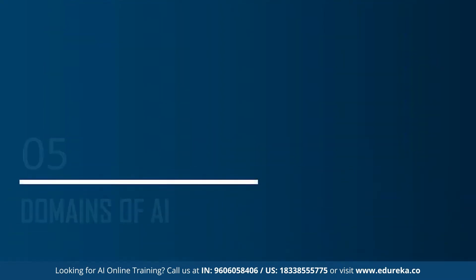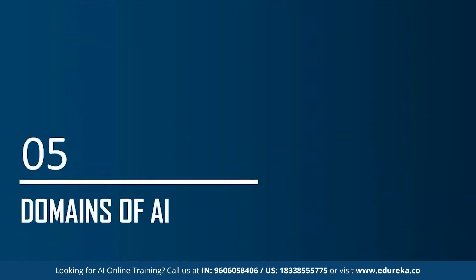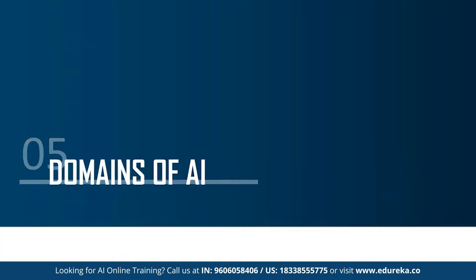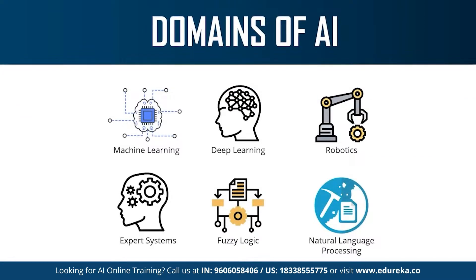The last topic is the different domains or branches of artificial intelligence. AI can be used to solve real-world problems by implementing machine learning, deep learning, natural language processing, robotics, expert systems, and fuzzy logic. AI has also been applied in computer vision and image processing. Machine learning is the science of getting machines to interpret, process, and analyze data to solve real-world problems — including supervised, unsupervised, and reinforcement learning.